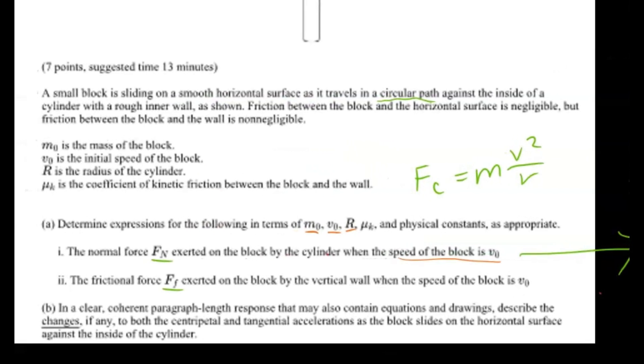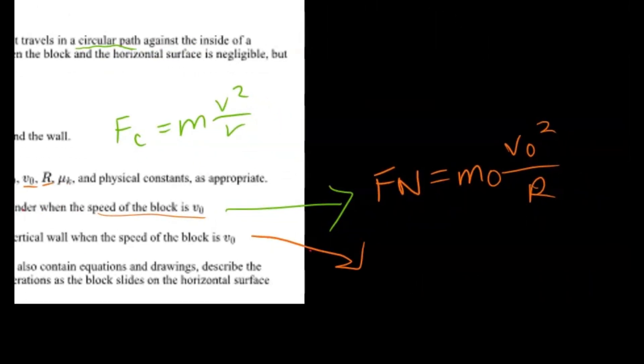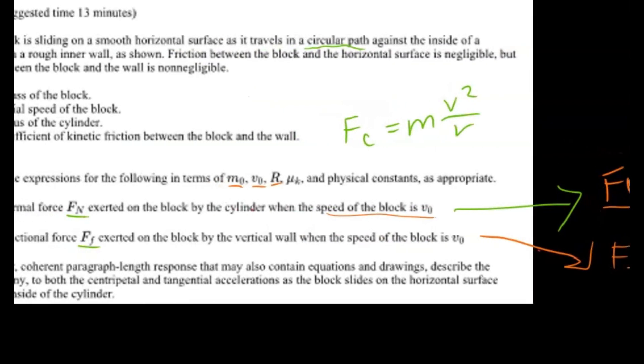So the next part says the write-up for the frictional force exerted on the block by the vertical wall when it has the same speed vo. So I'll write this to the side. So we know that force of friction is just equivalent to mu times fn, and look at that. Force normal, force normal. We already wrote the equation for force normal.